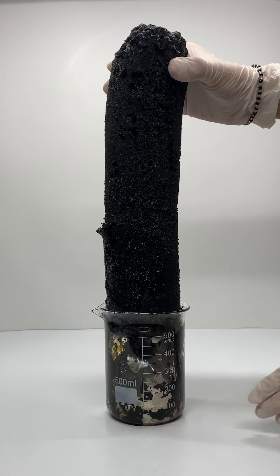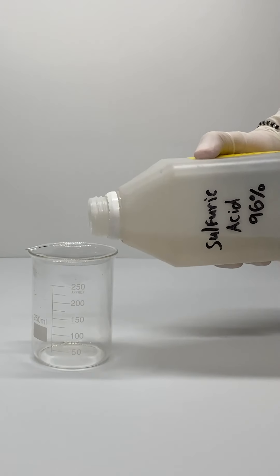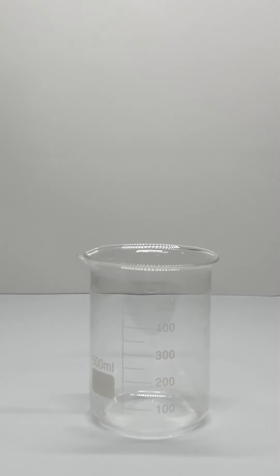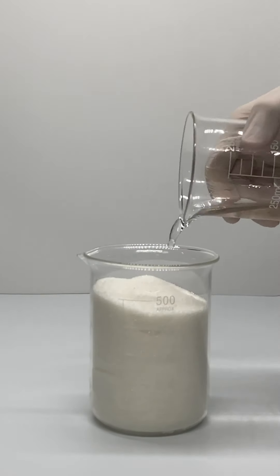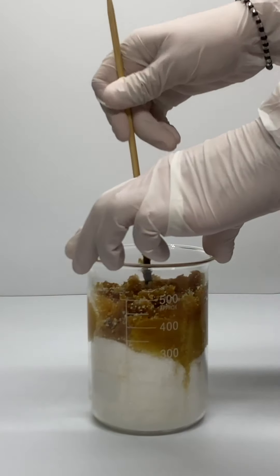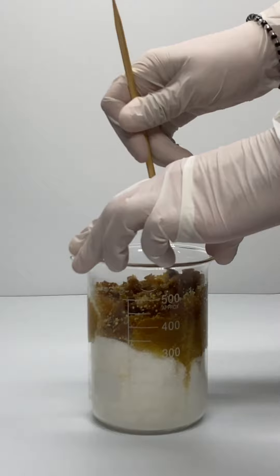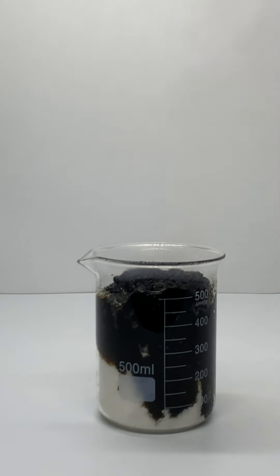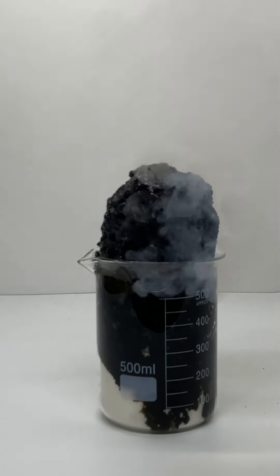Today I made a carbon snake. For this reaction I used sulfuric acid which is a really strong acid and sugar. The acid dehydrates the sugar meaning takes the water out of it. And this leaves us with mostly carbon.